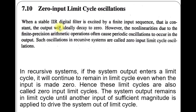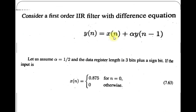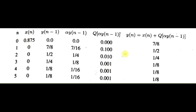What are zero input limit cycle oscillations? Consider an IIR filter with a difference equation where alpha equals 0.5, and x(0) = 0.875. We have a table showing zero input oscillation to prove it, with a decimal domain column, a binary domain column, and the resulting oscillations.